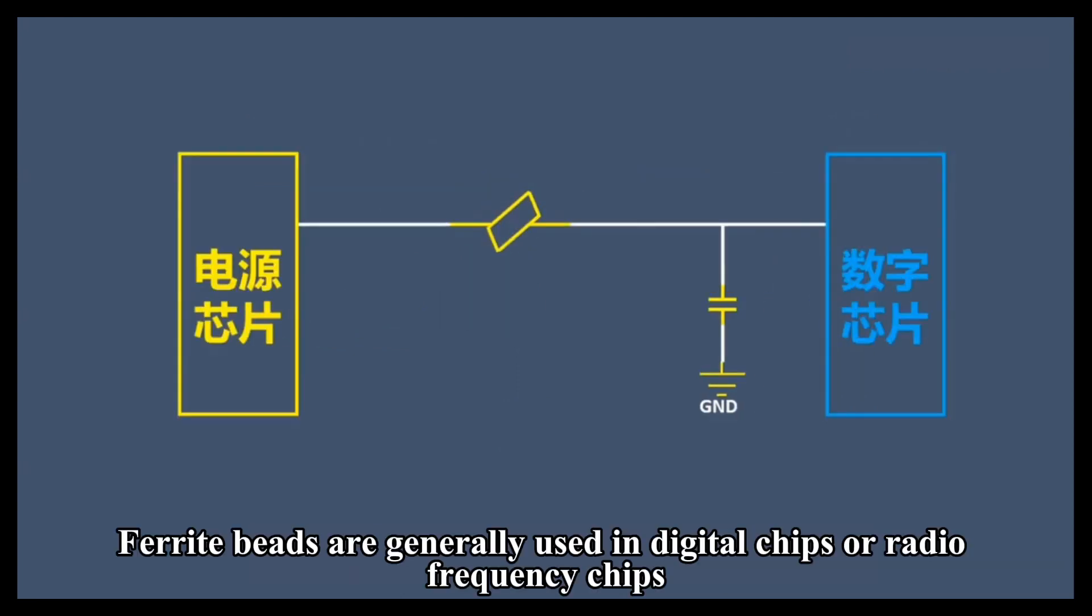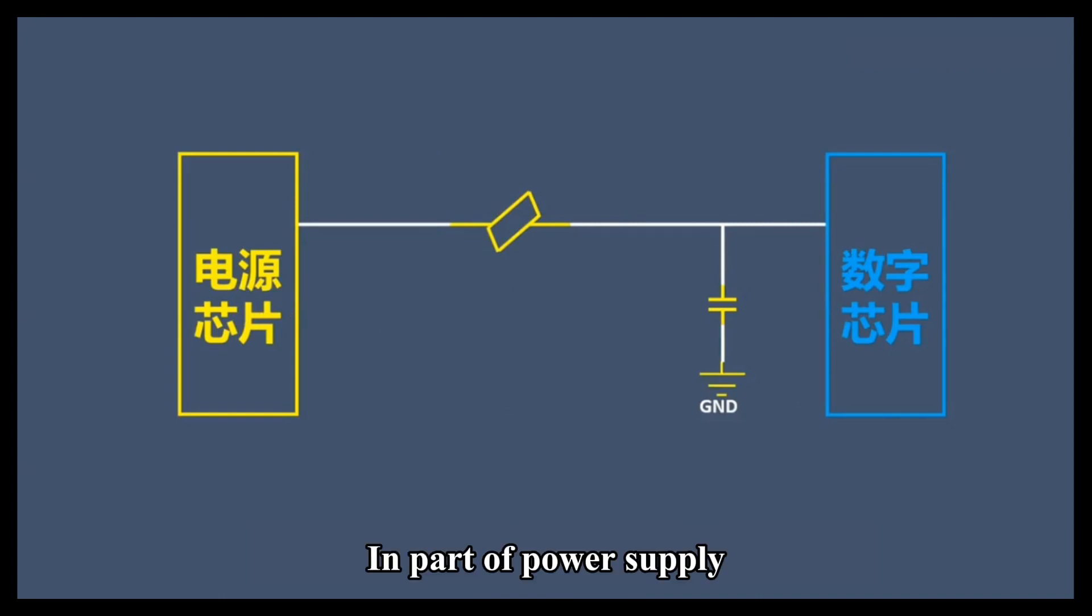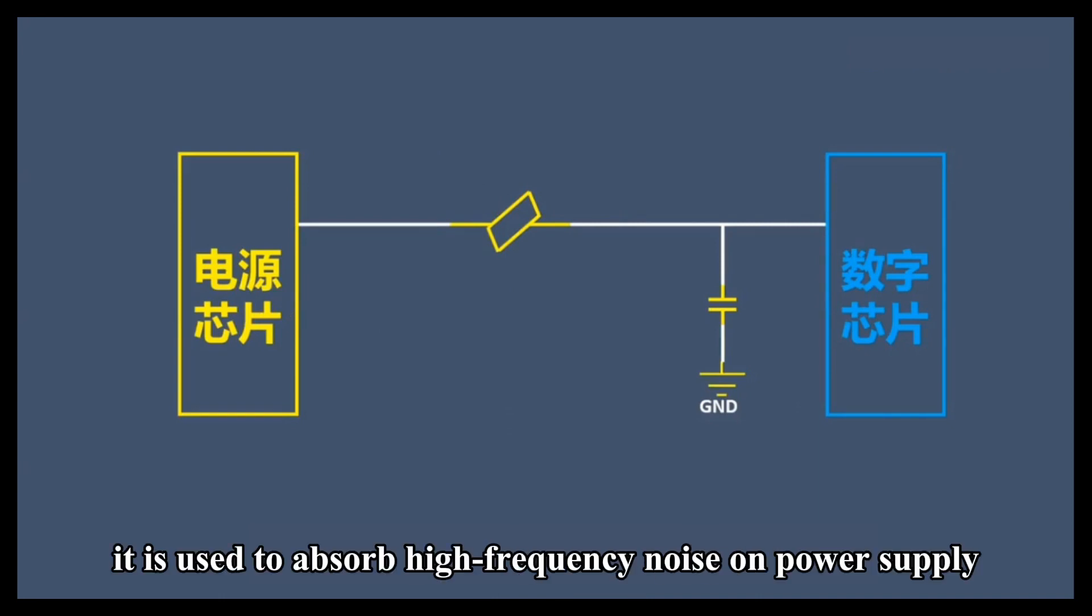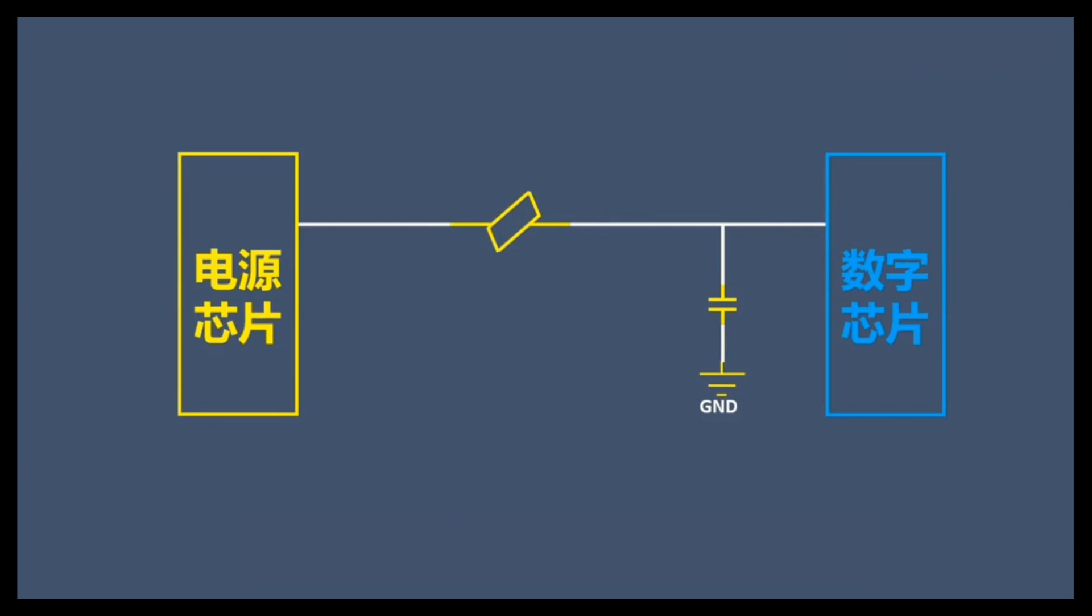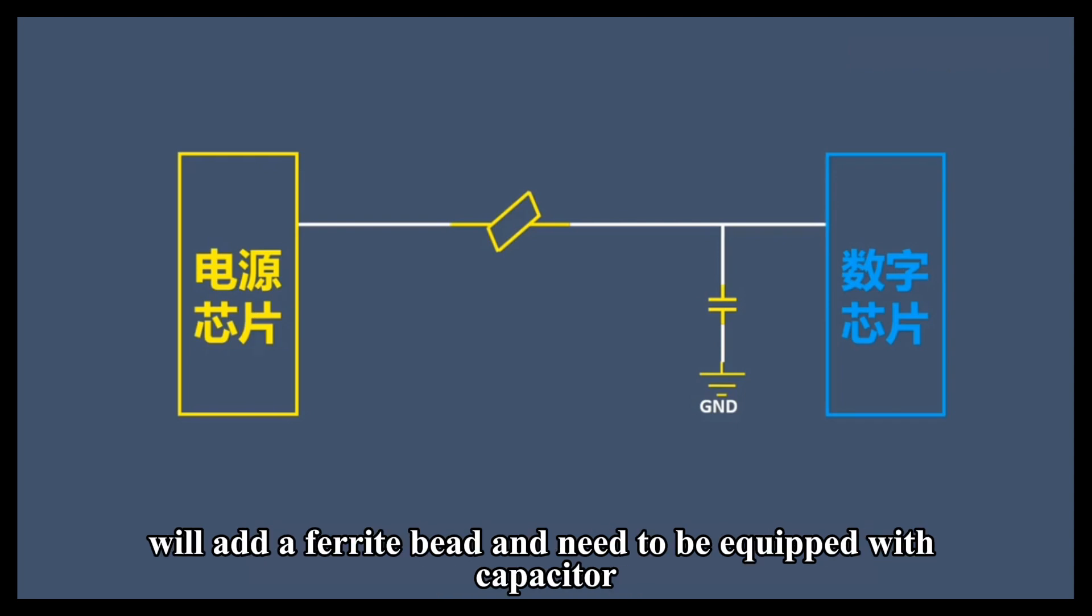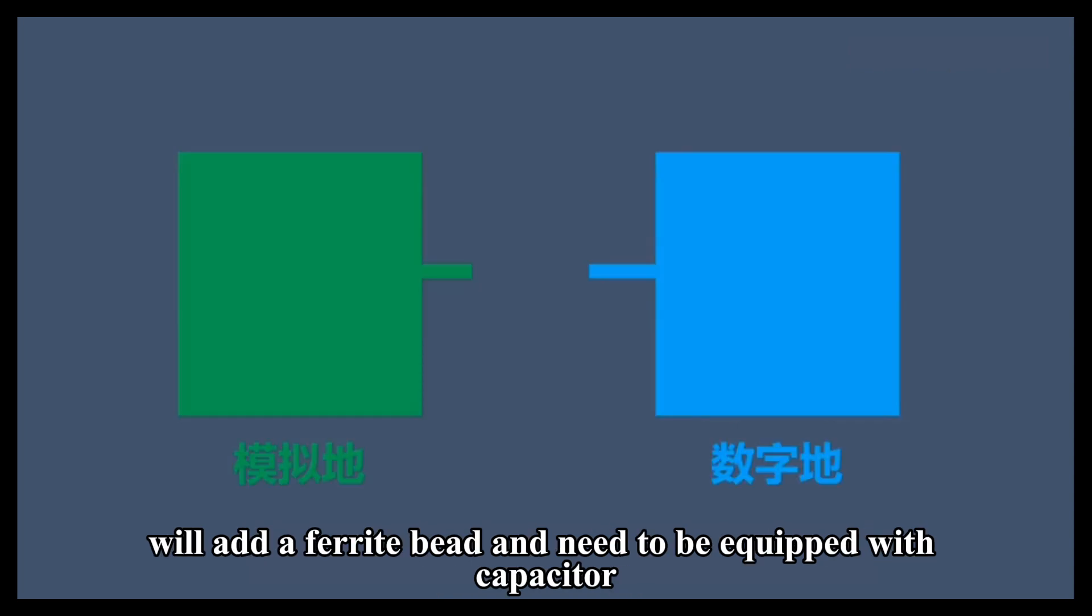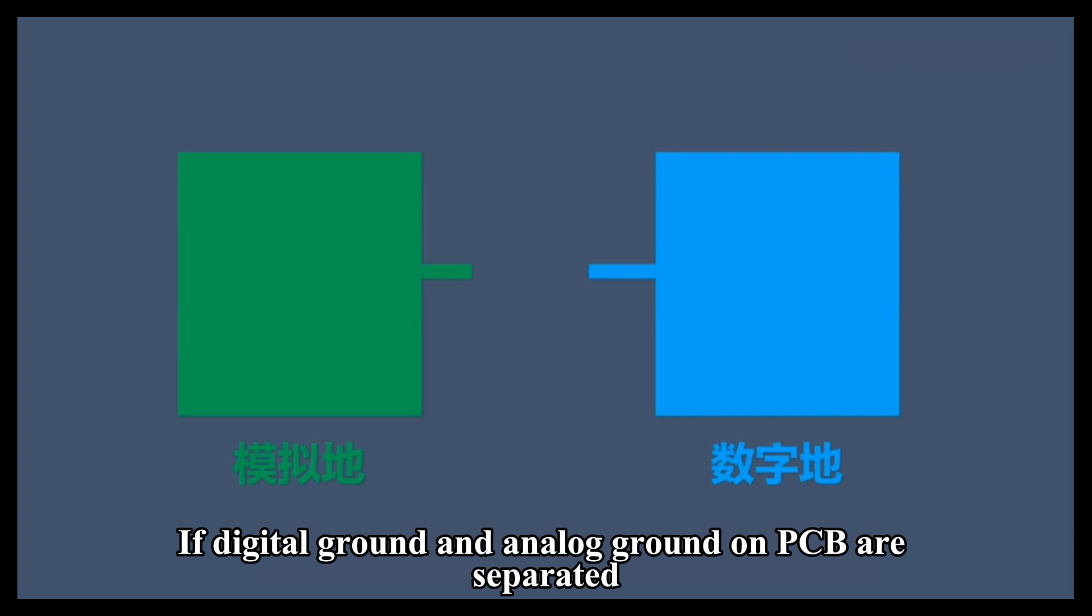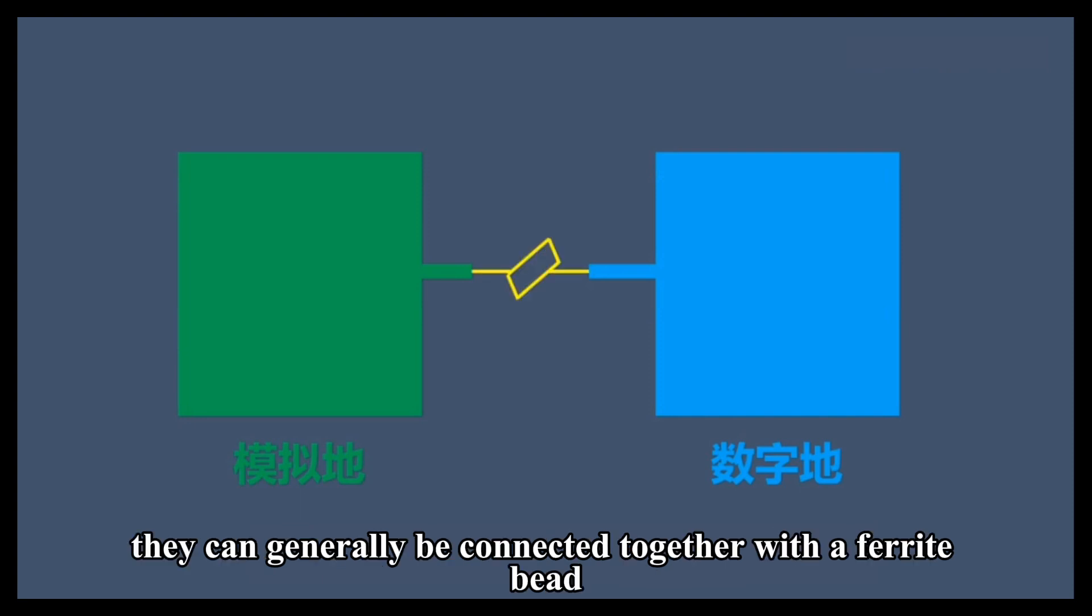Ferrite beads are generally used in digital chips or radio-frequency chips. In part of power supply, they are used to absorb high-frequency noise. For example, commonly used digital chip phase-locked loop power supply will add a ferrite bead and need to be equipped with a capacitor. If digital ground and analog ground on PCB are separated, they can generally be connected together with a ferrite bead.